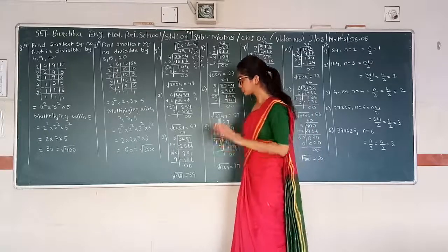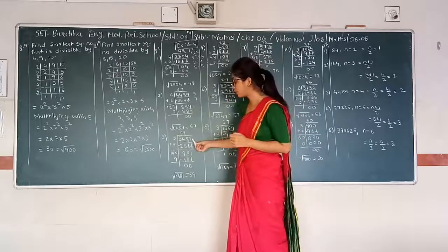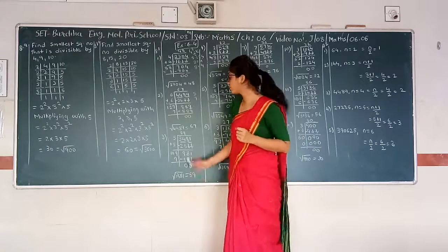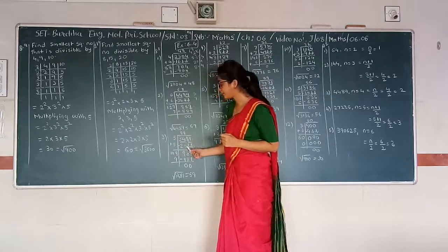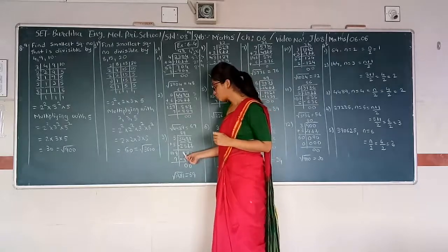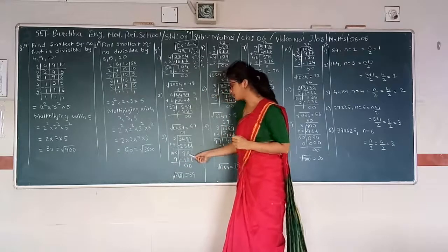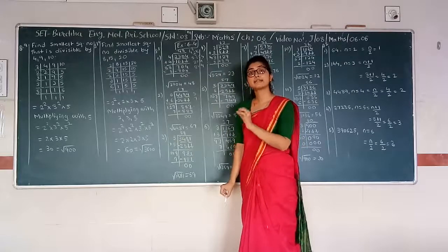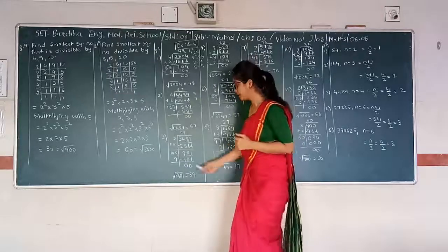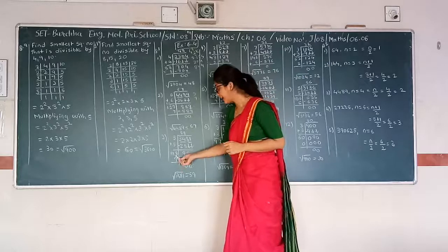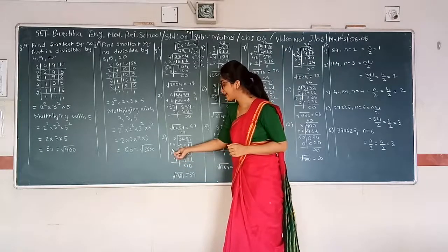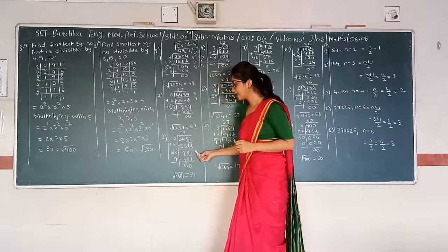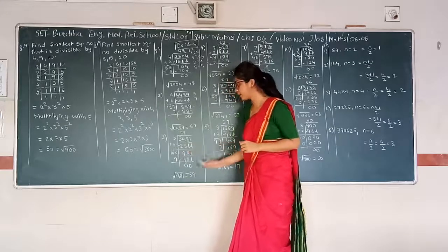Next: 3481. There are four digits, divided into two pairs: 34 and 81. 34 is not a perfect square. The nearest perfect square is 25, so we take 5. 5 times 5 is 25. 34 minus 25 gives 9. 5 plus 5 is 10. Taking 81 downward, we have 981. Unit digit is 1; numbers whose squares end in 1 are 1 and 9. We take 9. 109 times 9: 9 nines are 81, write 1 carry 8; 9 zeros are 0 plus 8 gives 8; 9 ones are 9. 981 minus 981 gives 0. Square root of 3481 is 59.